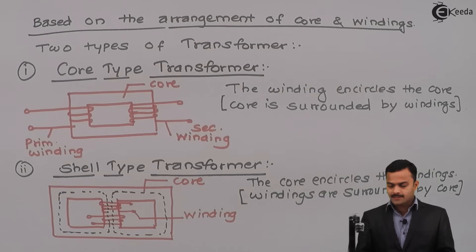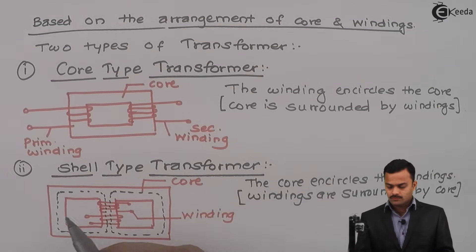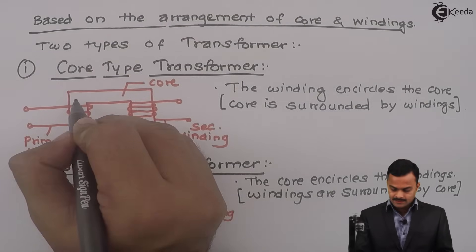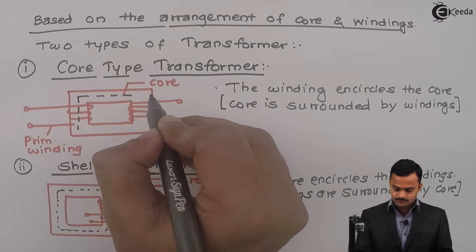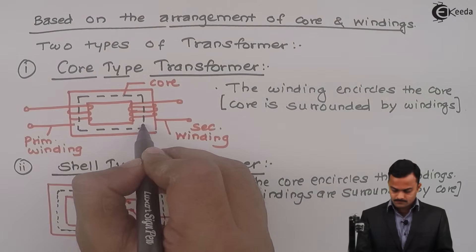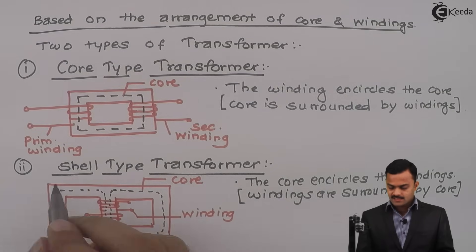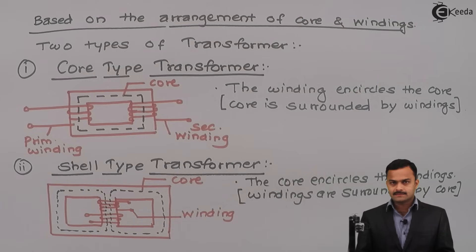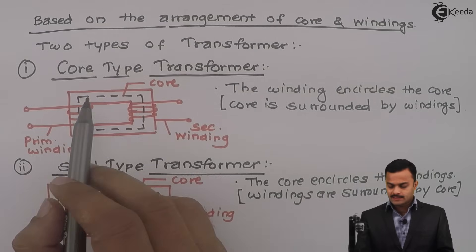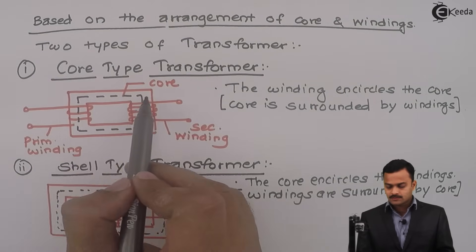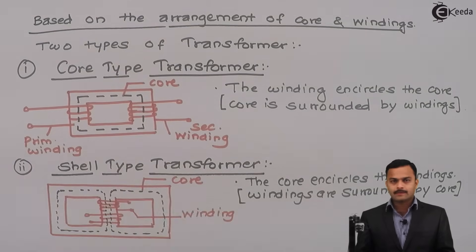So if you see the structure properly, there are some differences between these two. First is obviously based on the construction. Second, this is having only one magnetic circuit, whereas this shell type is having two magnetic circuits. Suppose I want to replace the windings. It is very easy over here. Just take this part of a core outside and take the windings out and replace. But replacing windings over here is not an easy job. So based on the arrangement of core and windings, we have seen two types of transformer. Normally, very high voltage transformers are of shell type. Thank you.